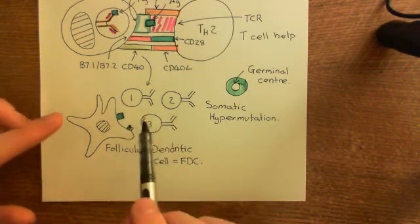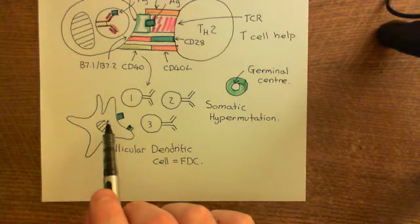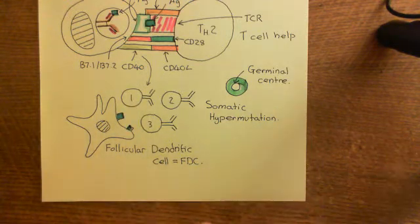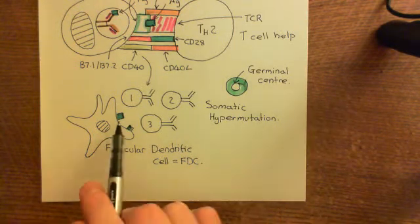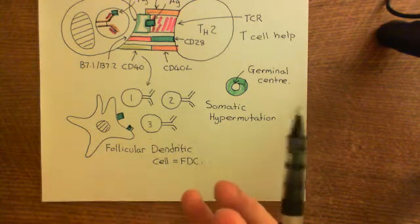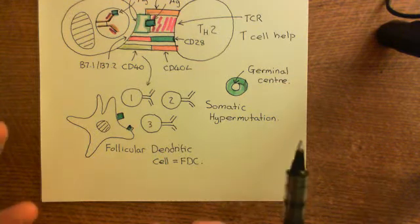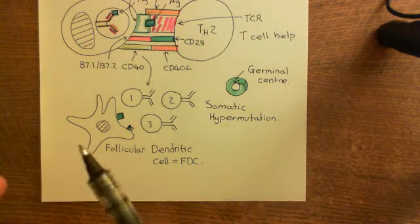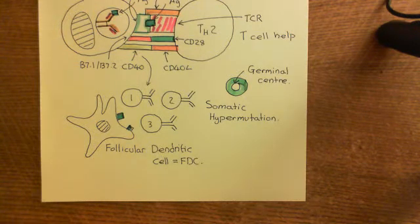These B-cells need to get this antigen to survive, and there is a limited amount of it — so you've got competition. You've got a huge population of B-cells all with slightly different B-cell receptors, and to survive they have to bind the antigen. Which ones are going to get the antigen? The ones which have the best B-cell receptor — those with the highest affinity for binding to the antigen will survive, and the others will die.